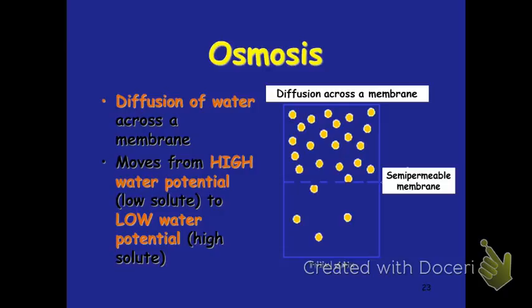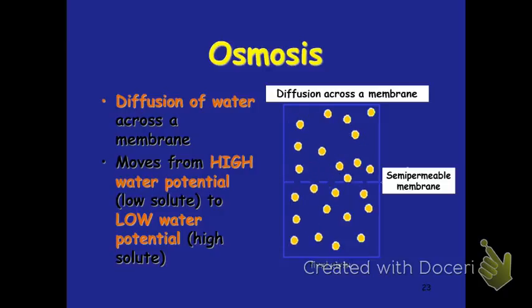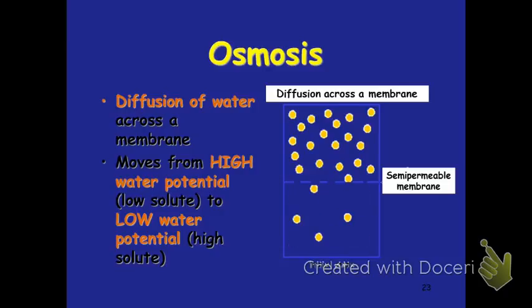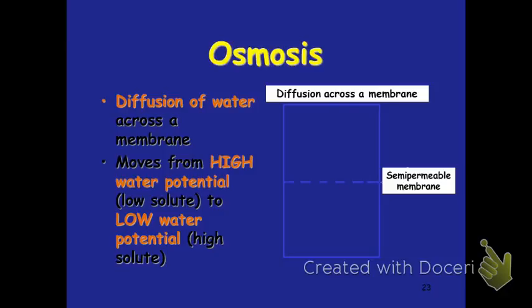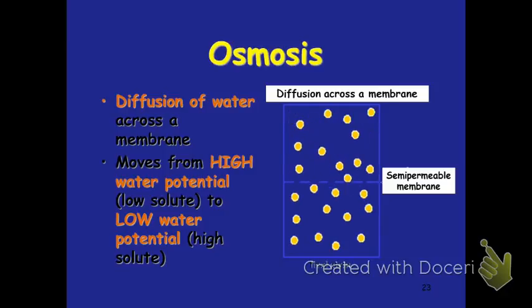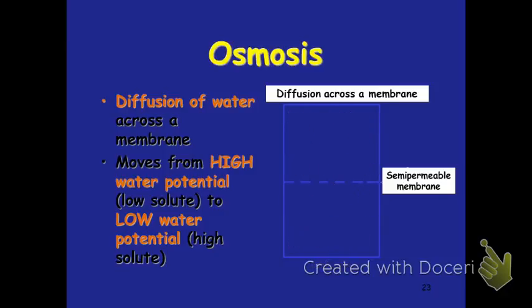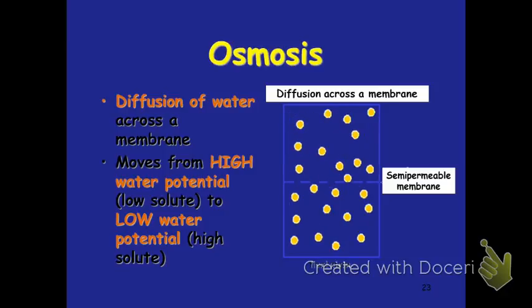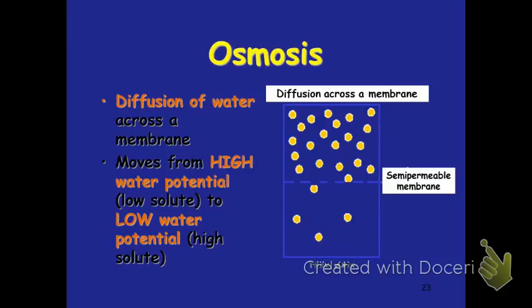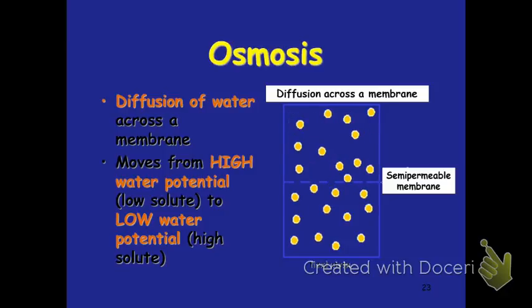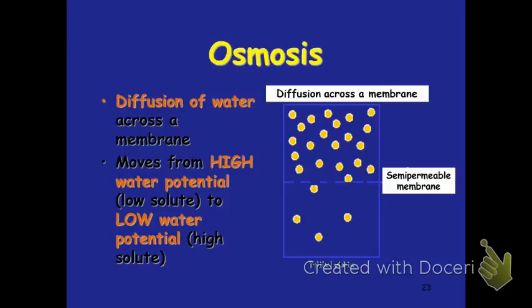Osmosis is a special term we use to talk about just the diffusion of water. The diffusion of water is movement of water across the membrane. This moves water from a high concentration to a low concentration — the same idea as diffusion, going from high to low. Just like diffusion, no energy is required for osmosis.